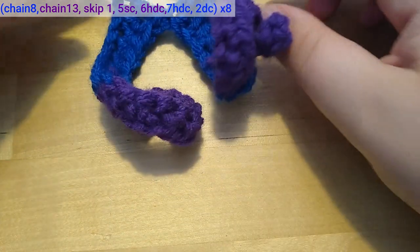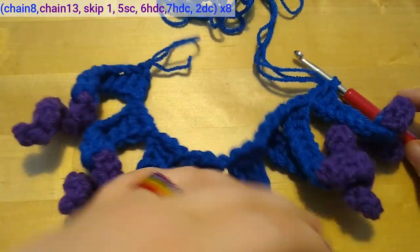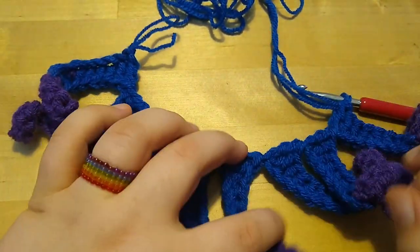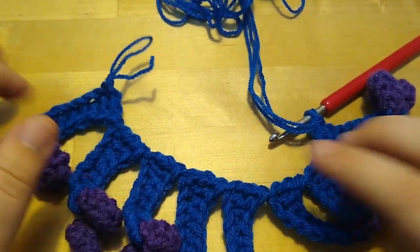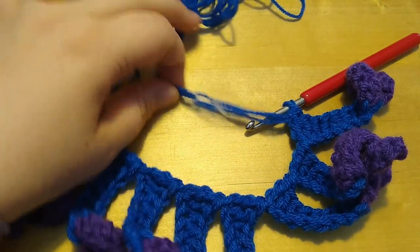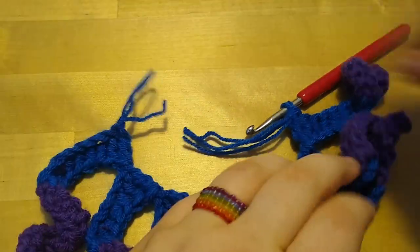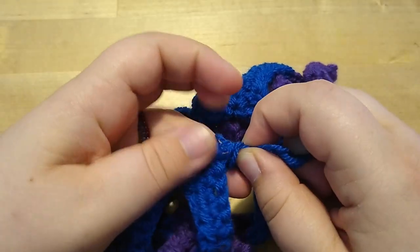Now I have 2 curly tentacles done and the other 6 are made the exact same way. Unlike last week, this octopus will be worked on closed rounds instead of a spiral, so I'm cutting my blue yarn, pulling it out and tying the ends together.